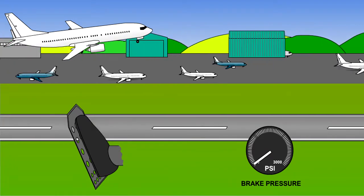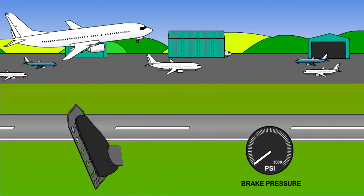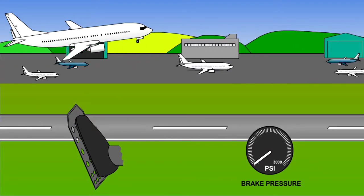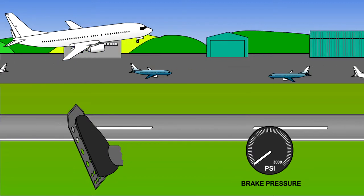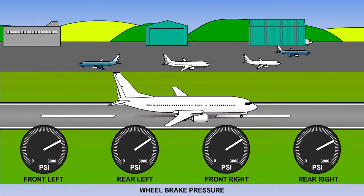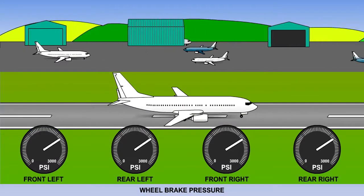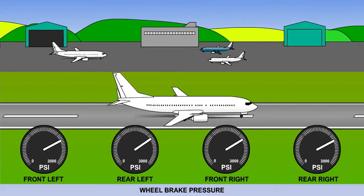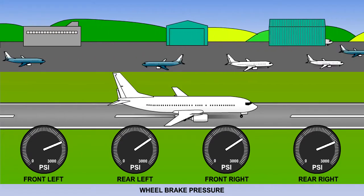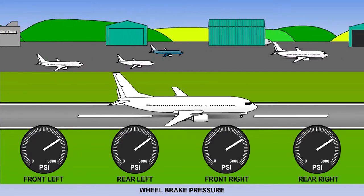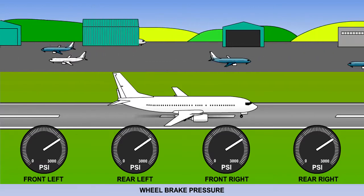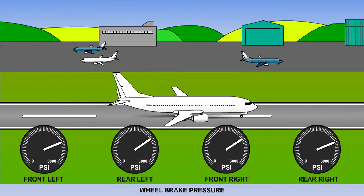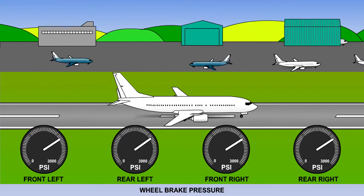This does not, however, imply that you should attempt a landing with the brake pedals depressed. It is a safety backup system only. For skid prevention, the anti-skid control unit will reduce the brake pressure to any wheel that it determines is approaching a skid, by monitoring the deceleration rate of the individual wheels. It will then modulate the pressure to ensure optimum braking.